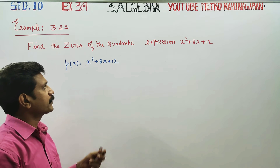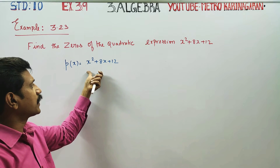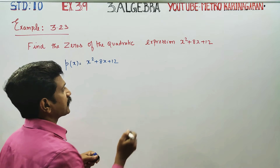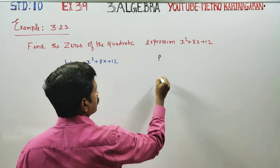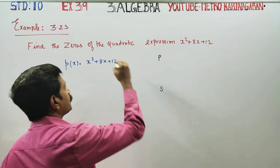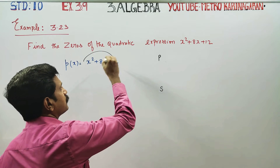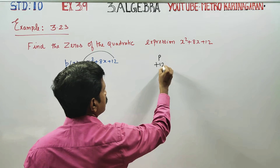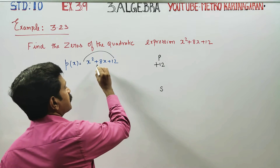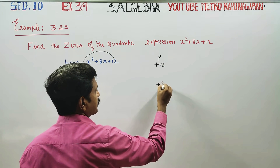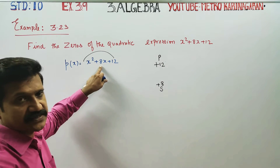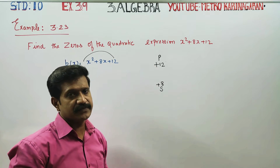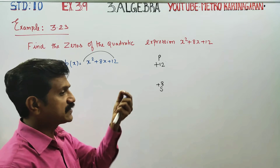We will test this using the product-sum method. Product times sum — product is called by the corner. Here, 1 and 12, or 12, are made, and the sum is plus 8. This is the first term sum. Considering the number less than x, we use the production factorization method.